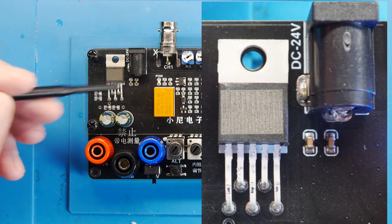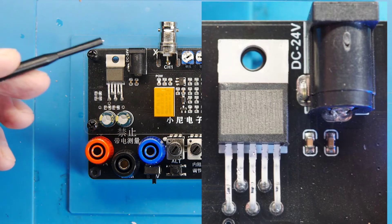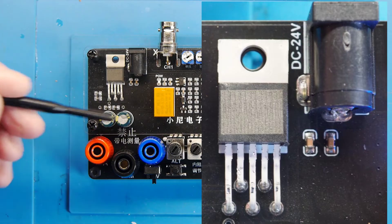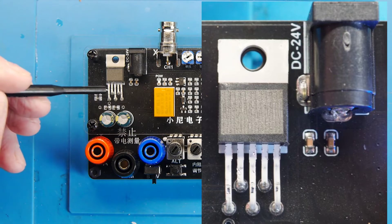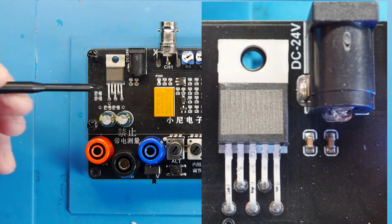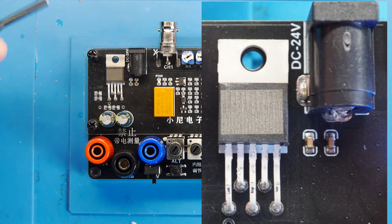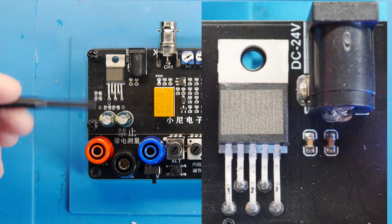So even though it's had the markings etched off it, if we power up the board and measure the voltage on pin two there, which is the output, we get about 12 volts, so it's highly likely an LM2575 12 volt version.